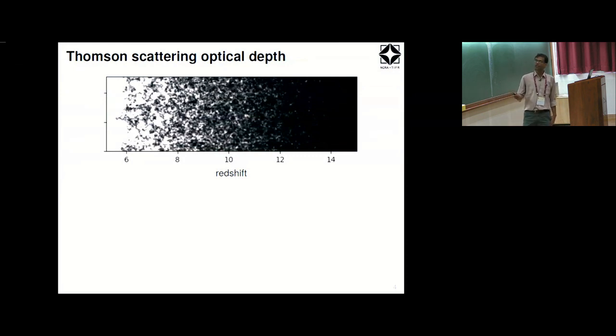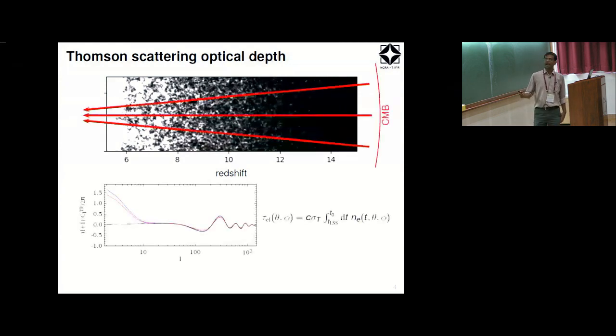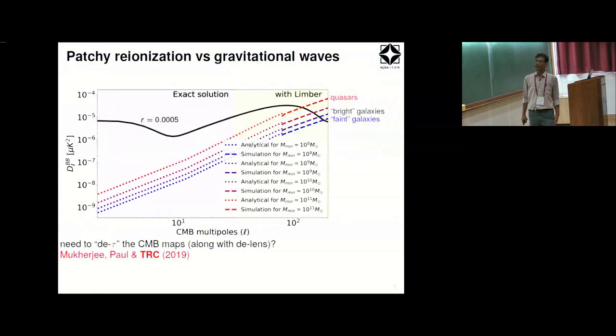So as you go to smaller and smaller redshifts these white regions grow and at some point the universe gets reionized completely. The point of reionization is it regenerates free electrons in the universe once more. As the CMB travels from the scattering surface to us, the photons pass through this medium and depending on the state of the universe they will start scattering with the free electrons once more. This gives rise to electron scattering optical depth which also gives rise to the E-mode polarization and this is a well-known story which the CMBR experiments starting from WMAP have been detecting.